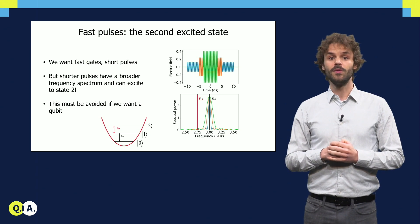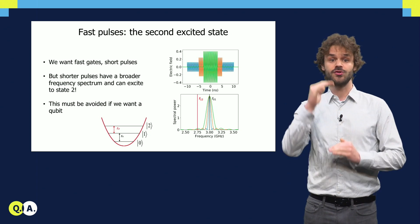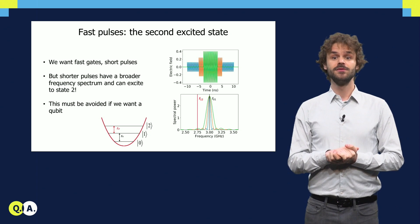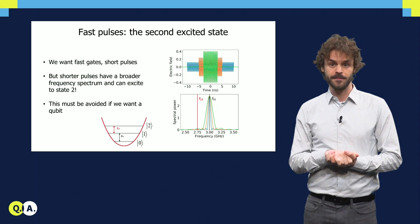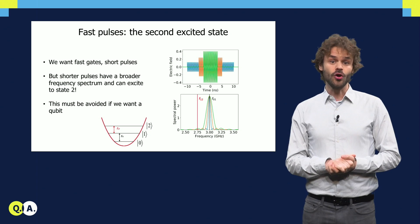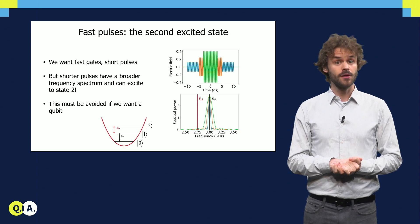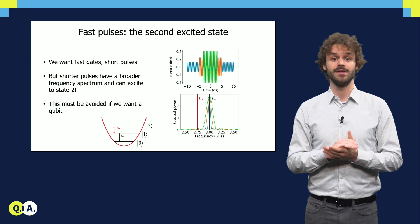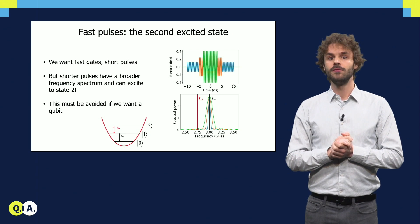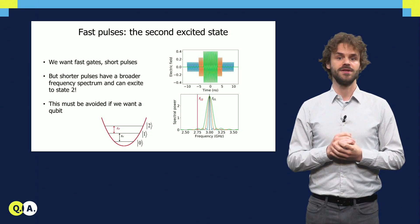Of course, we want to make the pulses as short and strong as possible to be able to do quantum computations quickly. However, the shorter the pulse, the more frequency components it has besides the transmission frequency F01. We can see this by looking at the spectral decomposition of the pulse.